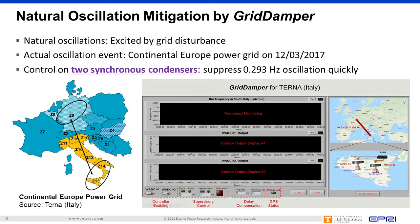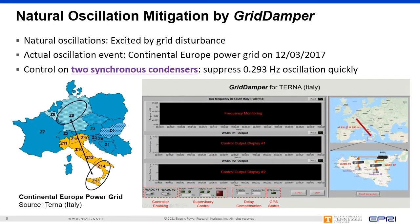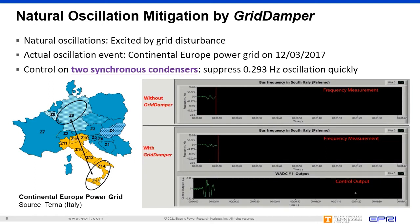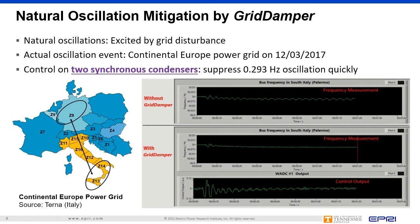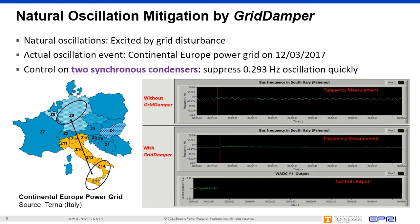The continental Europe power grid experiences a 0.293 Hz natural oscillation between the north and south. An actual oscillation event that happened in December 2017 was replicated to verify Grid Damper's performance. The oscillation was triggered by two consecutive generator disconnections within four minutes. Grid Damper detected the natural oscillation and activated two synchronous condensers in the south.